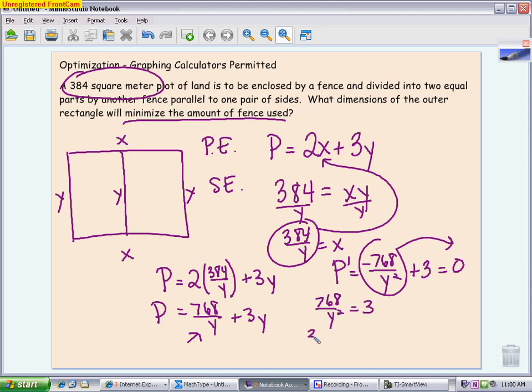Cross multiply, I get 3Y squared equals 768. Divide by 3, take the square root, you end up getting Y to be 16. Keep in mind, I don't want the negative value because I am dealing with a dimension. It can't be negative.